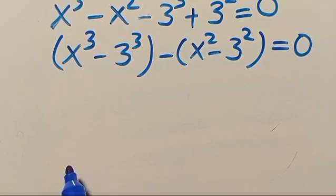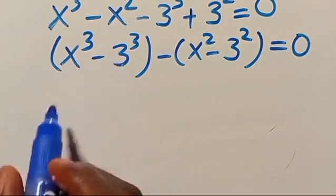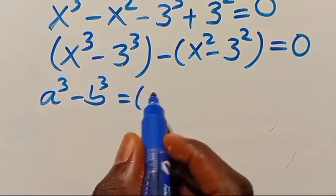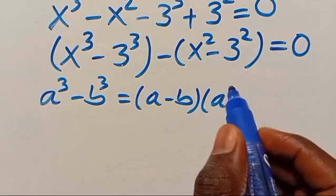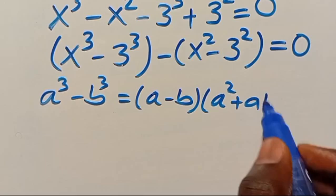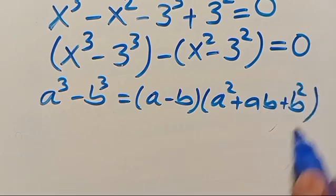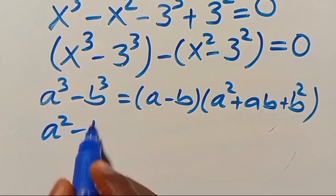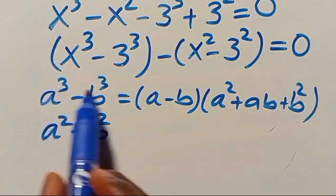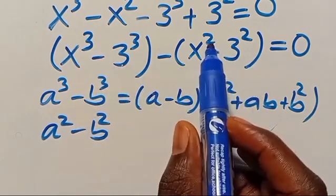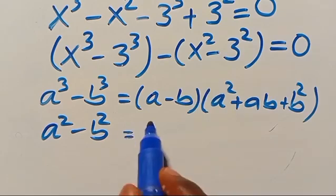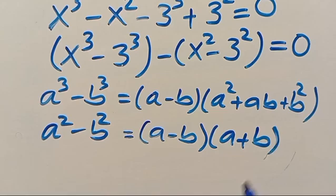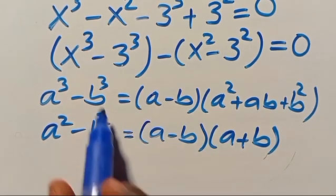Let's recall the algebraic identities. First, when we have a to the power of 3 minus b to the power of 3, this equals a minus b multiplied by a squared plus ab plus b squared — we call this the difference of two cubes. We also have a squared minus b squared, which is the difference of two squares, and this equals a minus b multiplied by a plus b.